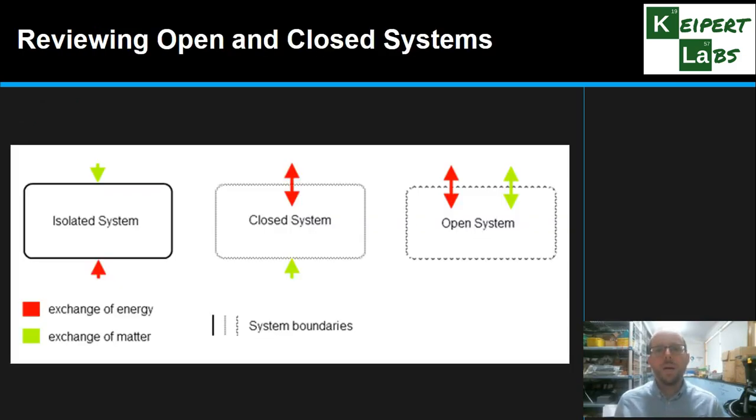So what do we mean by open and closed systems first? We've encountered this concept before, and you've seen this graphic before as well, that this idea that the systems that we can interact with can be either open, closed, or completely isolated. Now we're not really going to focus on isolated systems because they're not realistic. We don't realistically encounter them in everyday life. But open and closed systems certainly, in the laboratory or otherwise, we encounter very regularly.